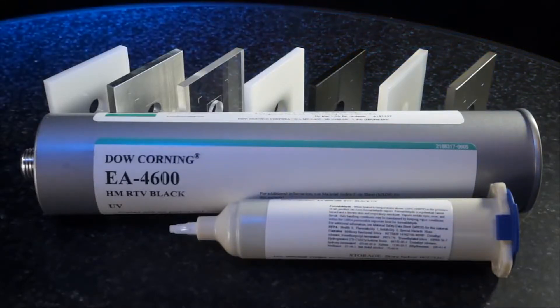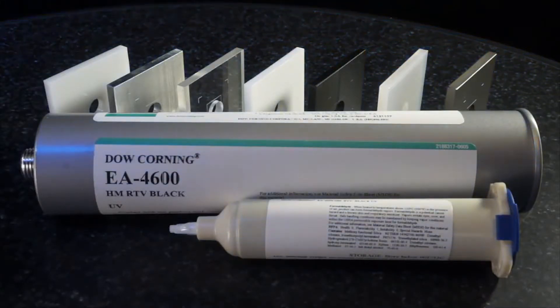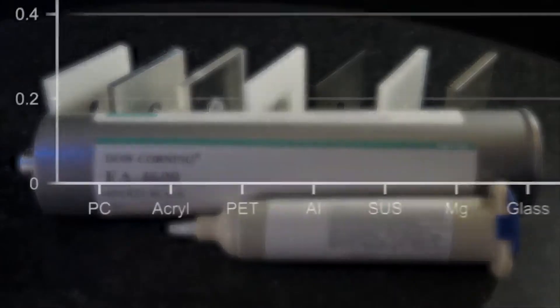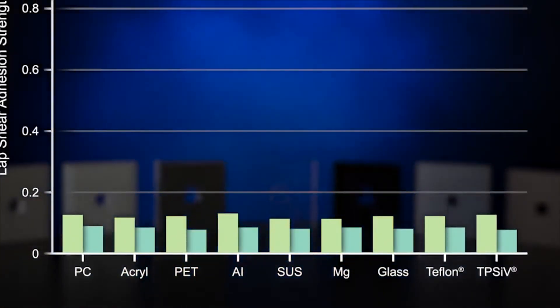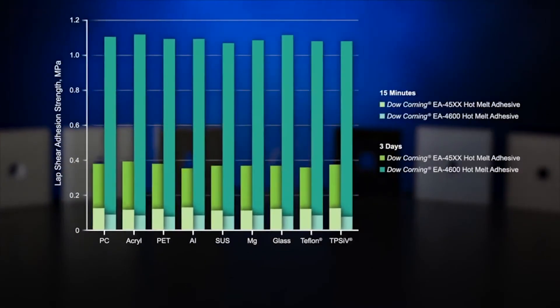Here you can see Dow Corning silicone hot melt adhesive with a wide variety of substrates. The EA 45XX product was a generation 1 material. You can see how much we have improved the adhesion of our new product EA 4600. But what's most important to focus on in this graph is the wide range of substrates that our hot melt adhesives successfully bond with.